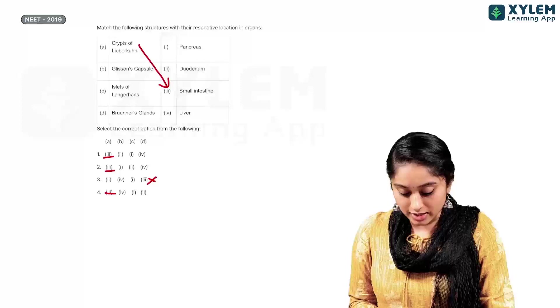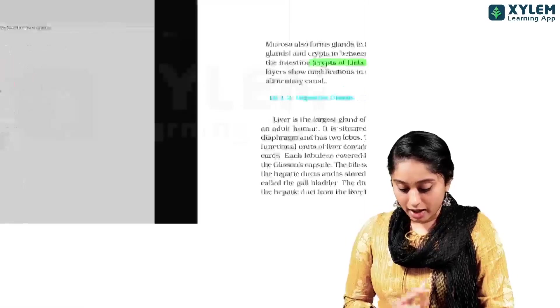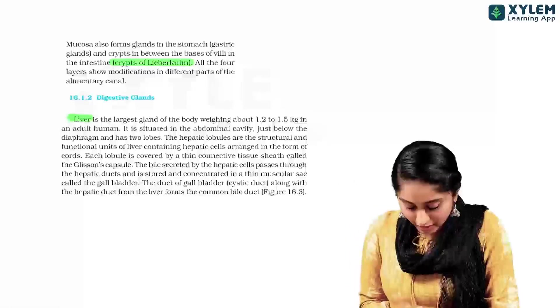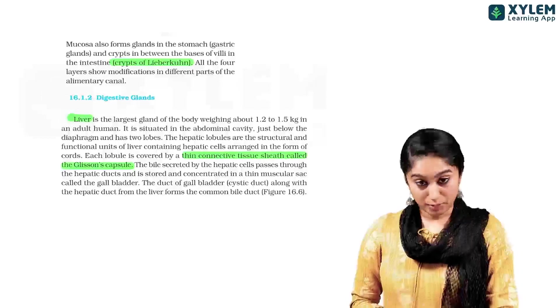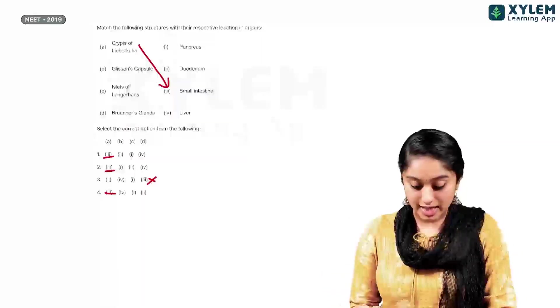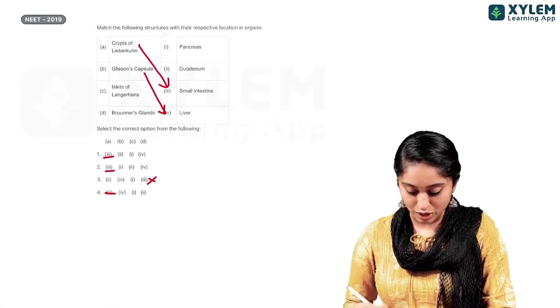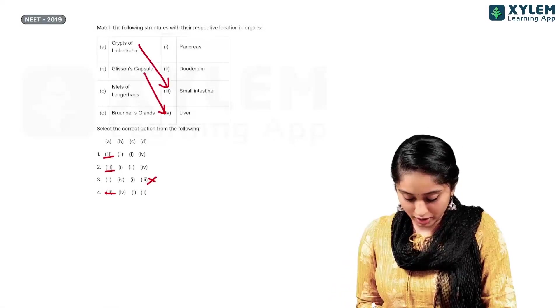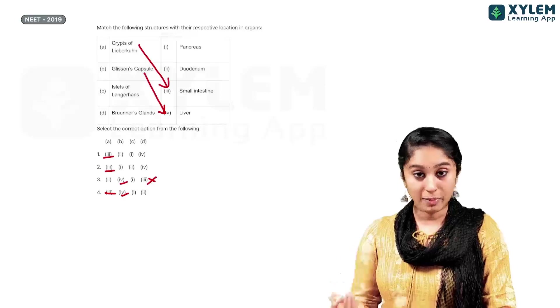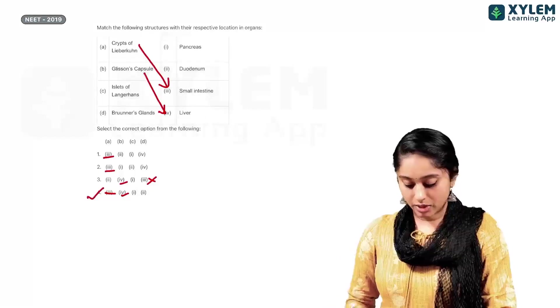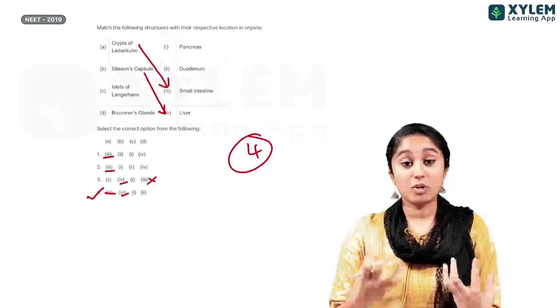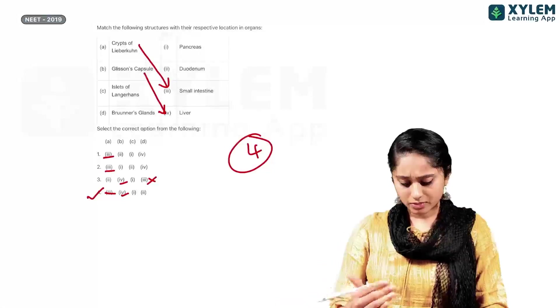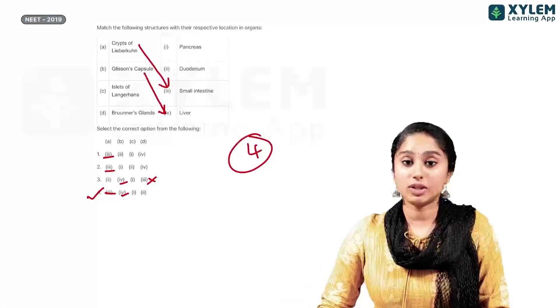Next, B it is the Glisson's Capsule. Again, NCERT we know that the liver is covered with a thin connective tissue sheath called the Glisson's Capsule. So, Glisson's Capsule, it is there in the liver. We will map B to 4. Now, B to 4 has 2. So, undoubtedly, my answer will be 4. So, see, when you are struggling for time or time management, you can get to the correct answer.